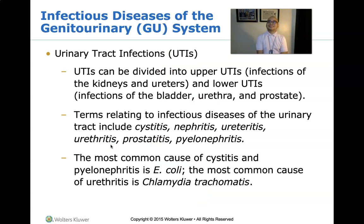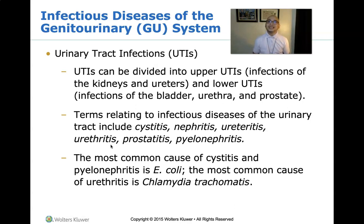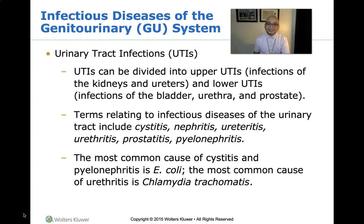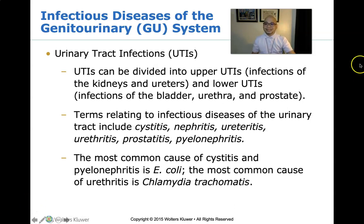Let us talk about urinary tract infections. UTIs can be divided into upper UTIs — infections of the kidneys and ureters — and lower UTIs — infections of the bladder, urethra, and prostate. Cystitis is the inflammation of the bladder itself, usually caused by infection. It is a common type of UTI, particularly in women, and mild cases often get better within three days, though some cases require antibiotic therapy.